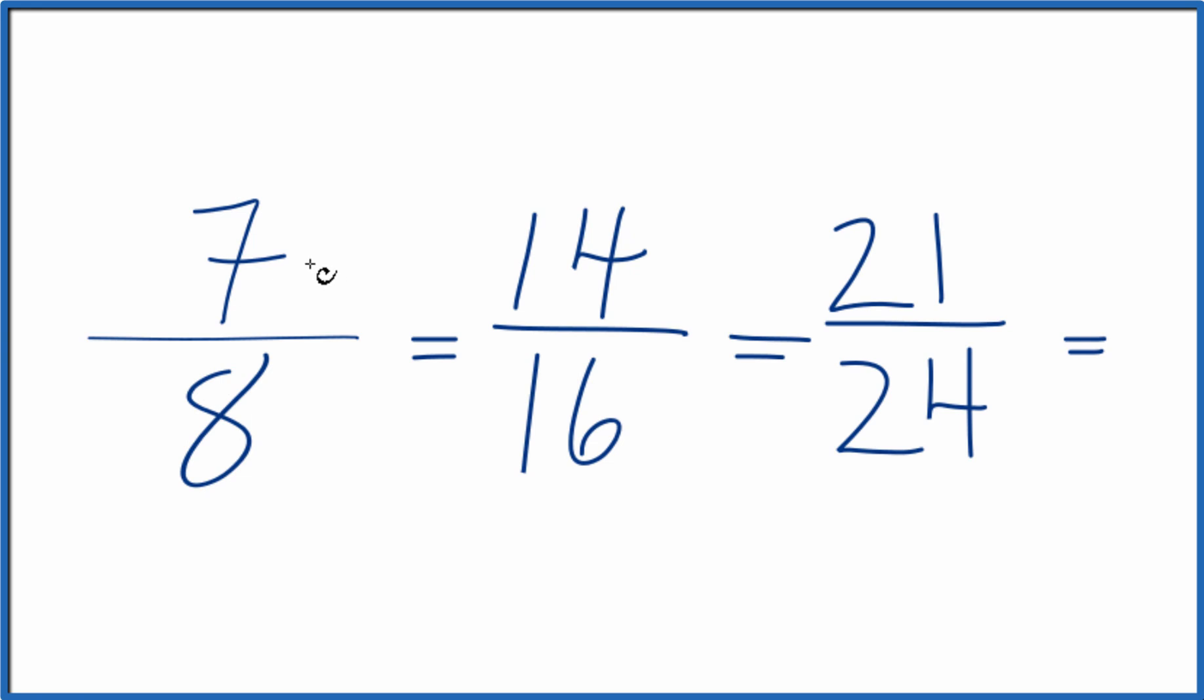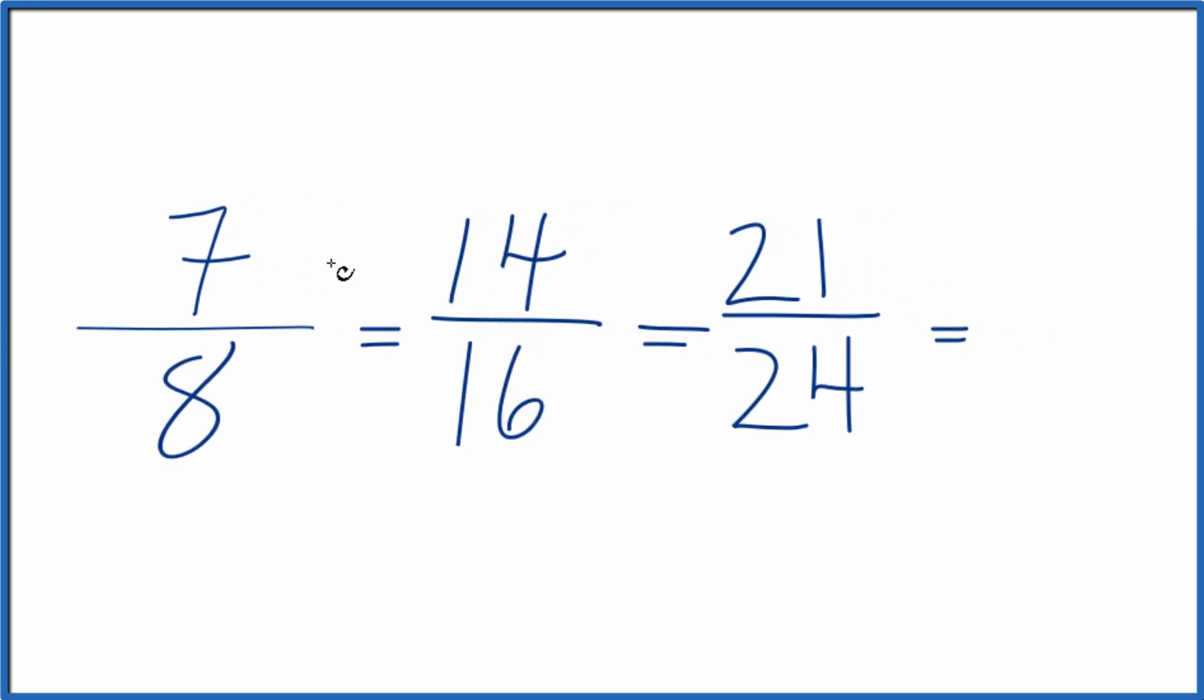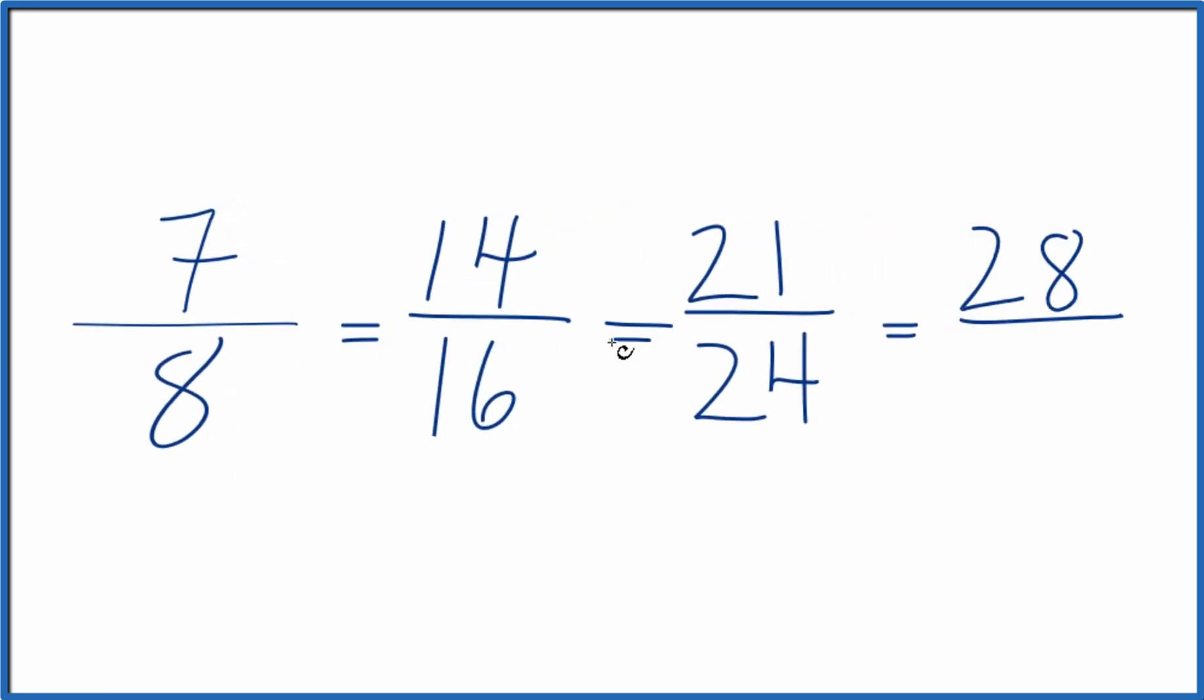Let's do it again. Let's multiply each by 4. 7 times 4 is 28. And then 8 times 4 is 32. Another equivalent ratio or equivalent fraction for 7 eighths.